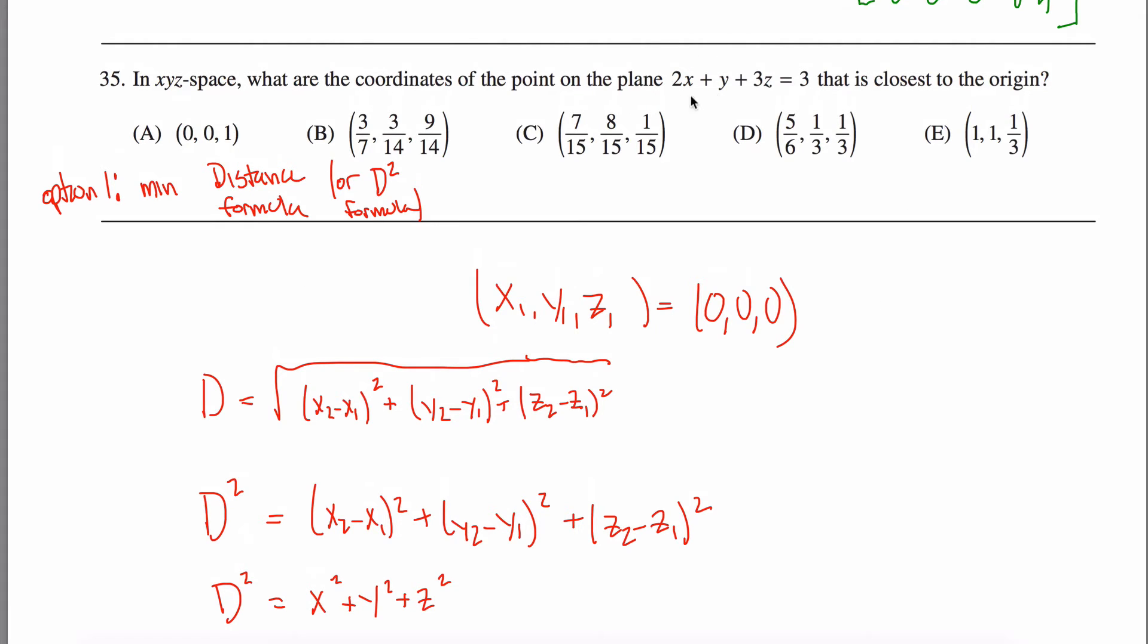So for example, this clearly satisfies this because if x is 0, y is 0, and z is 1, I get a true statement. And it's easy to find the square of the distance because 0 squared plus 0 squared plus 1 squared is just 1.